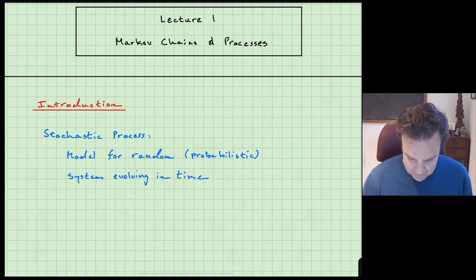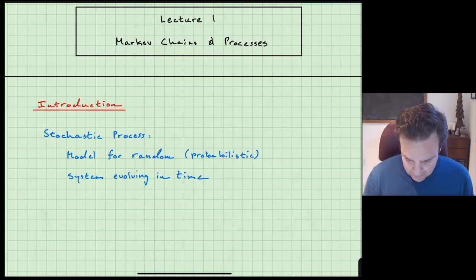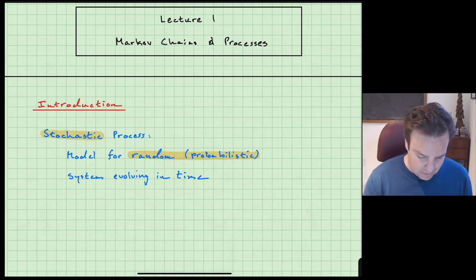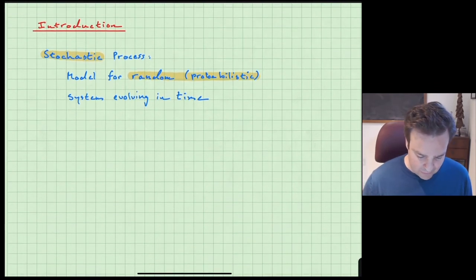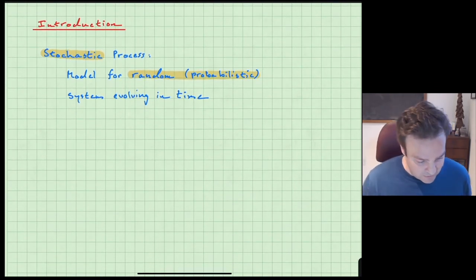The 'evolving in time' part goes along with the word 'process,' while the random or probabilistic part goes along with the word 'stochastic.' That's a crude way to define things — not really a mathematician's favorite way to write out a definition.